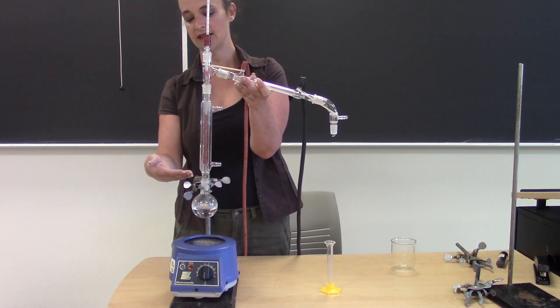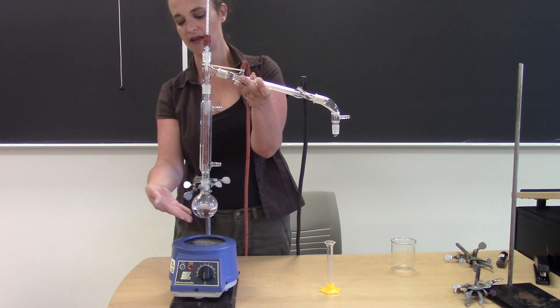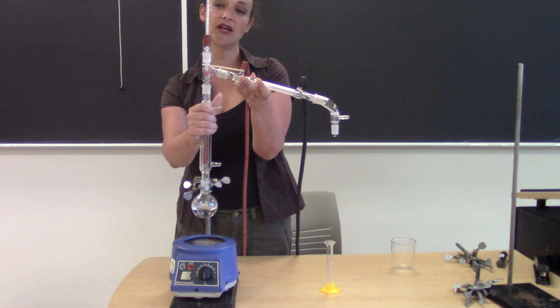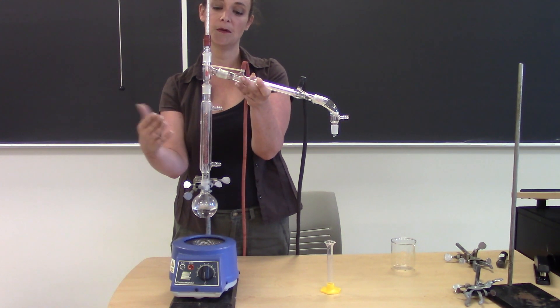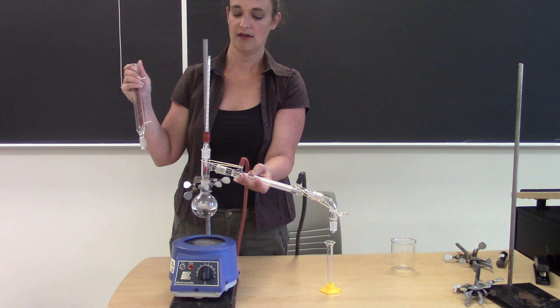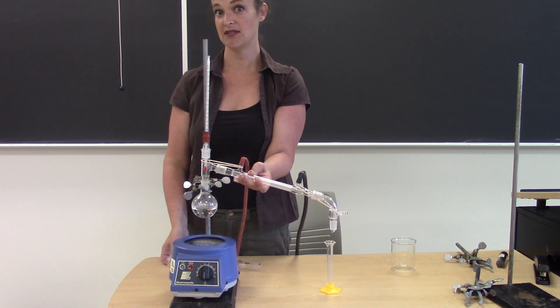So the theory here is that running a distillation with a fractionating column on it will result in a much purer product than simply having the condenser there and running a simple distillation.